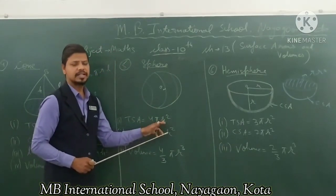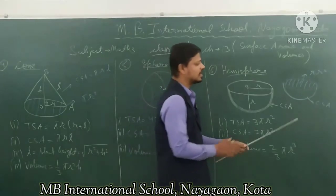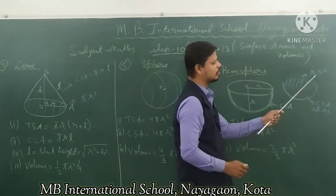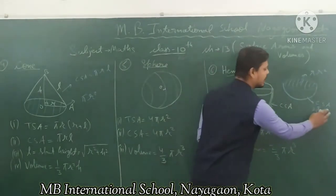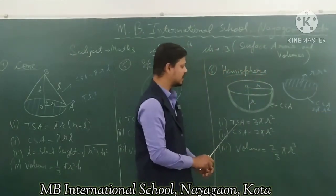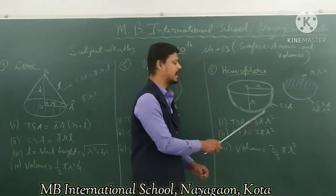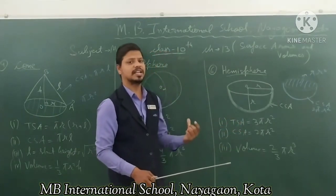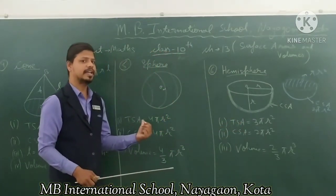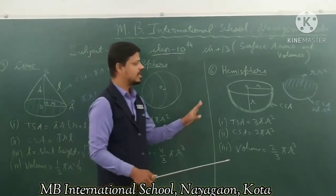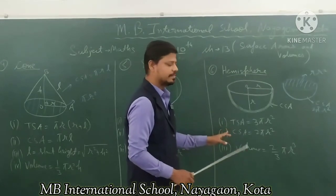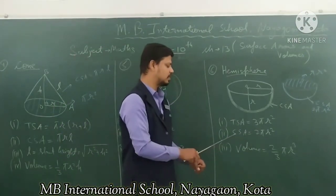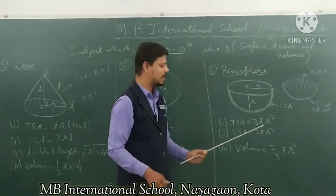The total surface area of a hemisphere is 3 pi r square. Now for the curved surface area: since the total surface area of a sphere is 4 pi r square, the curved surface area of a hemisphere is half of that, which is 2 pi r square.